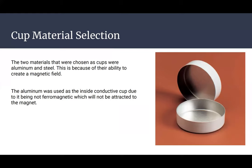For the cup material selection, the two materials that were chosen as cups were aluminum and steel. This is because of their ability to create a magnetic field. The aluminum was used as the inside conductive cup due to it being not ferromagnetic which will not be attracted to the magnet.